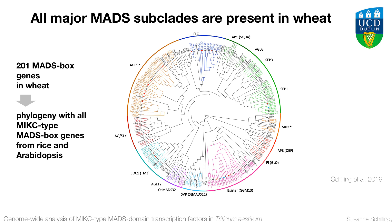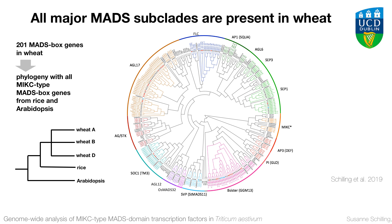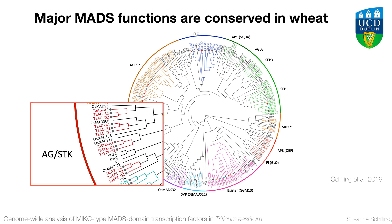We took all the genes that we knew from Arabidopsis and rice, put them together with our wheat genes, and constructed this phylogeny. The first thing we see is that wheat has all the different subclades that we would expect for a monocot — that was reassuring, and it underlines the significance of these genes. If you look a little bit closer into the phylogeny, what we generally find is three different wheat genes: one from the A, one from the B, and one from the D genome, with a closely related rice gene and a more distantly related Arabidopsis gene. So basically, the gene phylogeny follows the species phylogeny, and this is the case for many different subclades.